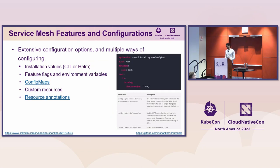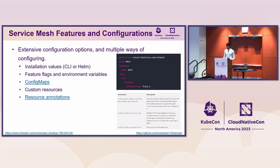Not only can there be so much to configure, but there are often multiple ways of configuring a service mesh. We have installation values, annotations, CRDs, and so on. This example shows how you define the mesh-wide configuration for Consul service mesh, and below that is an example of how you would configure the Linkerd proxy with resource annotations. For a service mesh like Istio, a lot of these configuration pathways can be overlapping, and I'll be giving a few examples of those later.